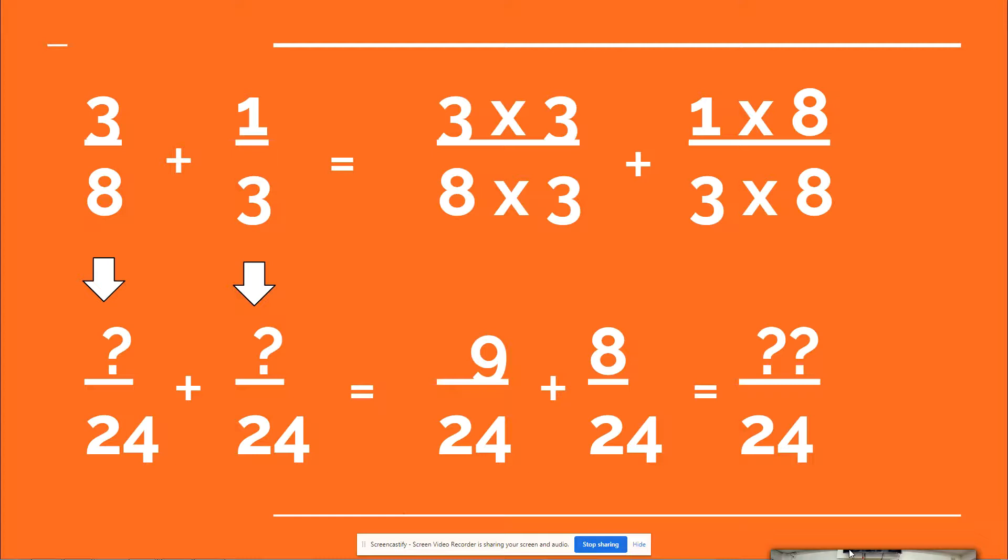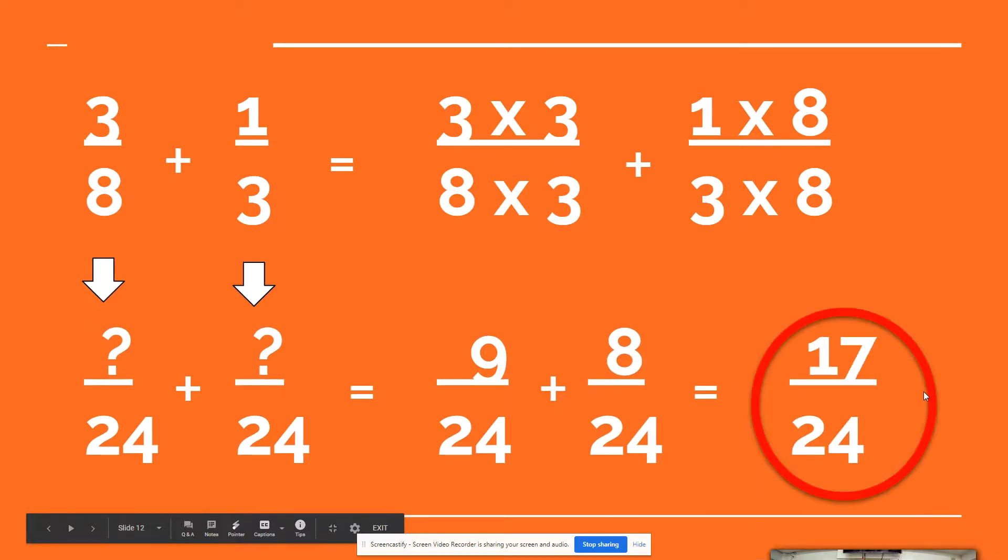Can we now add our numerators this time? Of course, because we have the same denominator. 9 plus 8 equals 17, and 24 is our denominator.